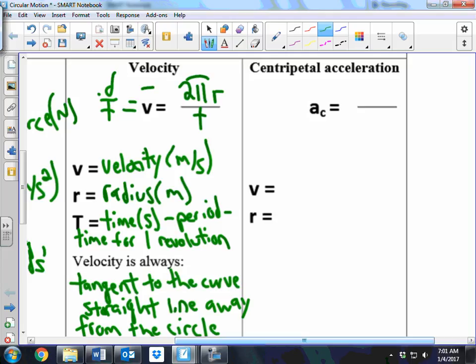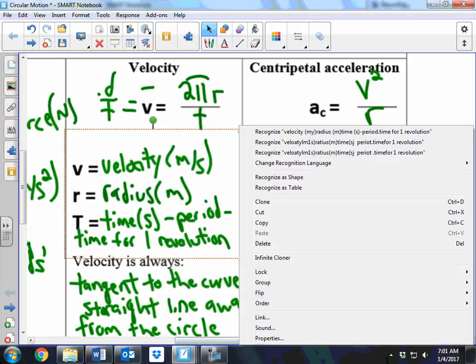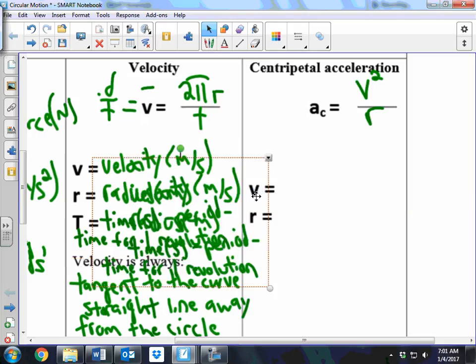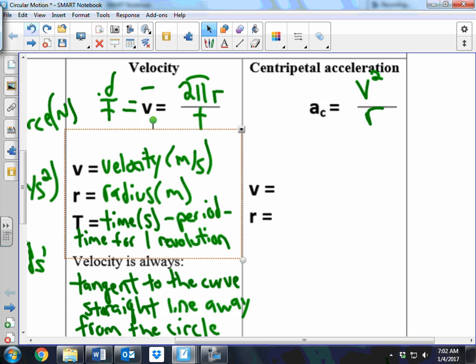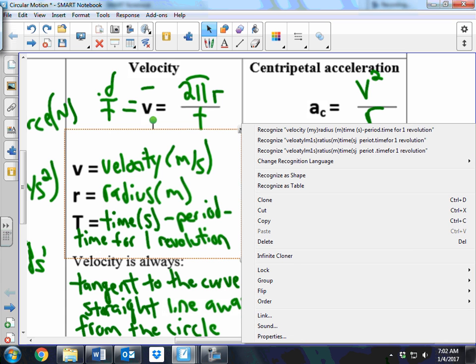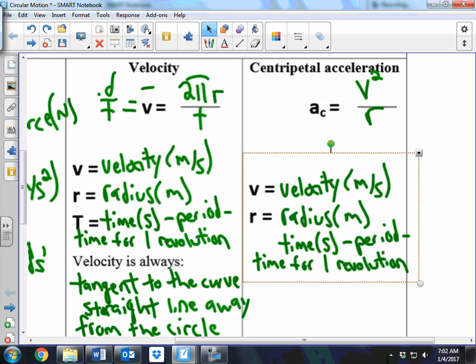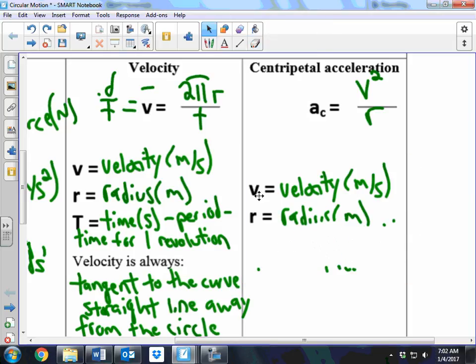Now, centripetal acceleration is a little different than before. And I'm just going to give you the equation. I'm not going to worry about deriving it for you because it'll probably confuse you more. But centripetal acceleration equals v squared over r. And this is in your reference table. And once again, v is just velocity.